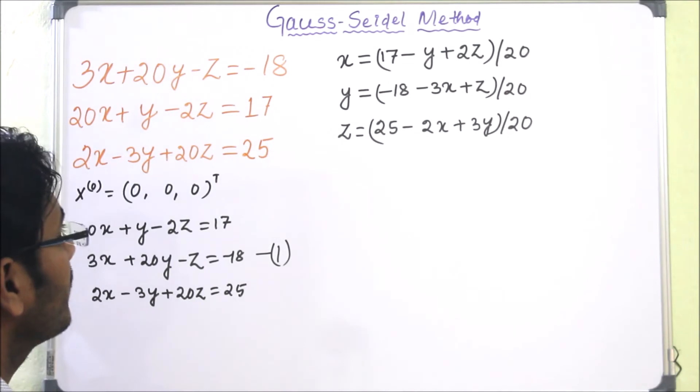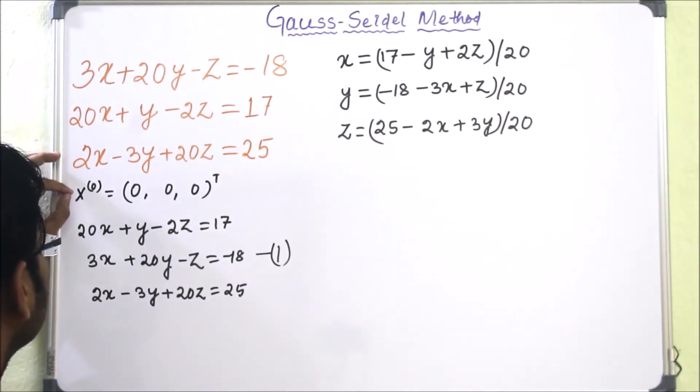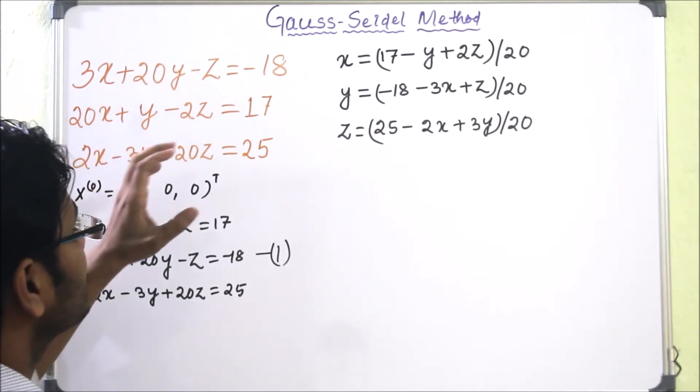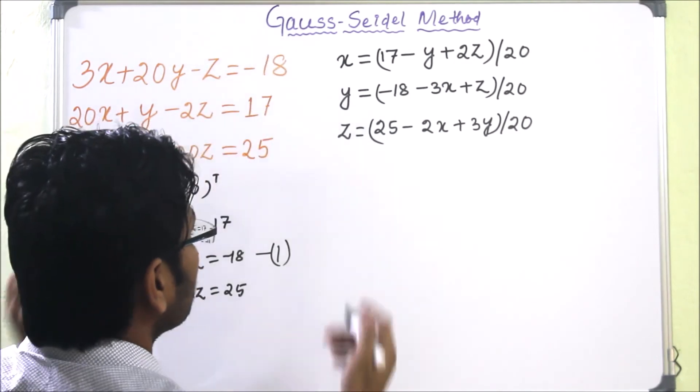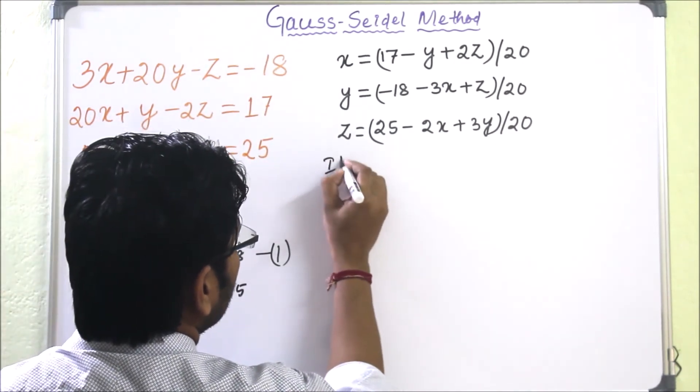Now we have to apply the initial condition. Initial condition says that X0 is (0, 0, 0), means x, y, z values are 0, 0, 0. So in these equations, we have to do iteration 1.